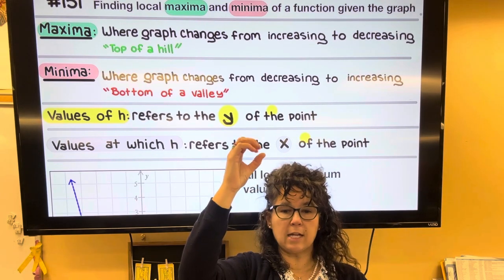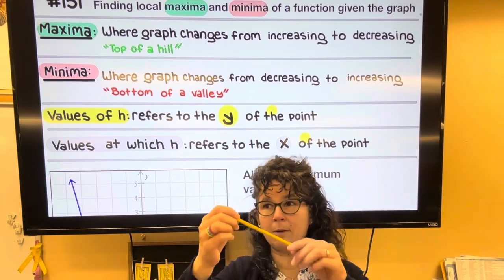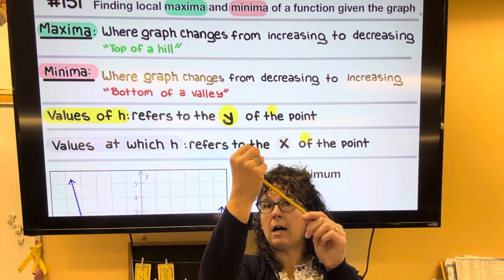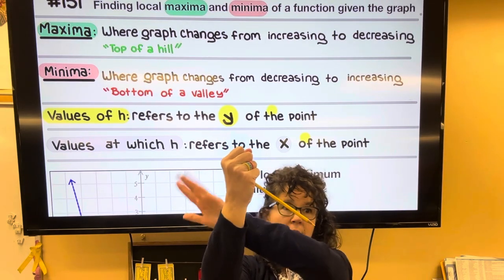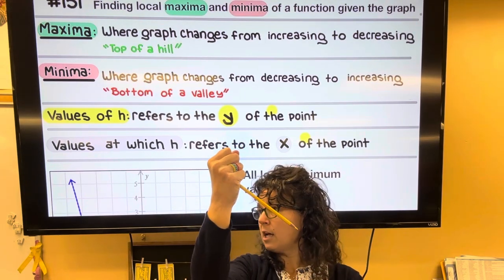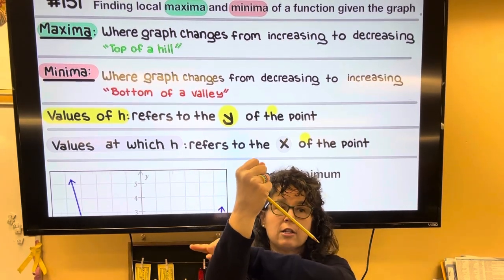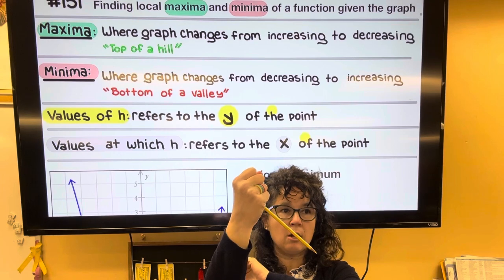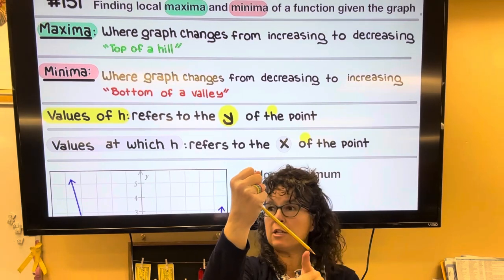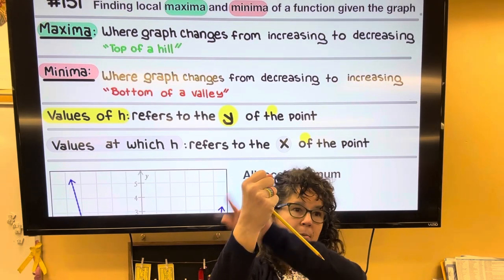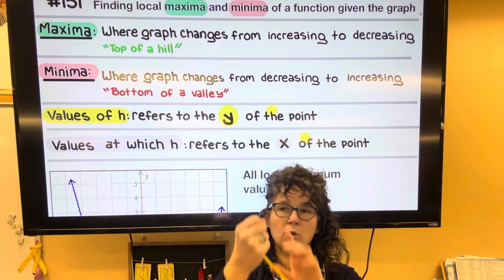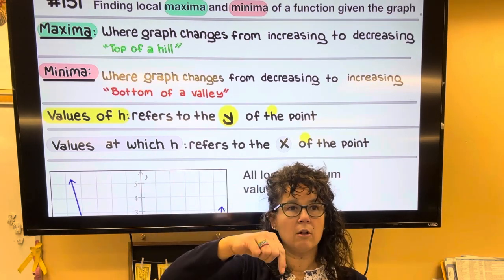So if you're just at the top, let's say I have a line segment and I have a dot right here on the line segment and there's nothing over here, it's not a maxima because the technical definition is that it's a point where you're changing from increasing to decreasing and nothing's happening over here. So it's only going to be at the top of a hill for a maxima.